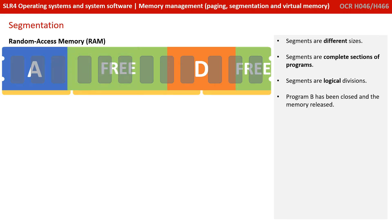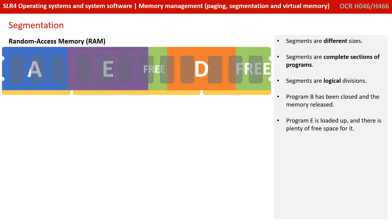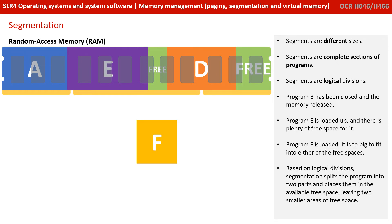Program B has been closed and the memory has been released. A new program, E, is loaded — there's plenty of free space, so it just goes in. Now program F arrives; it's too big to fit in either of the free spaces. But based on logical and sensible divisions, segmentation can split the program into two parts and places them in the available free space, leaving two smaller areas of free space.